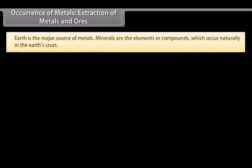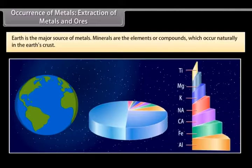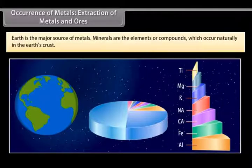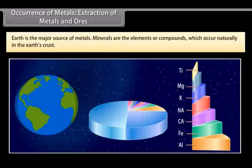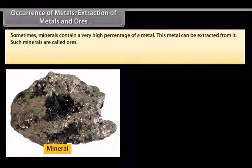Occurrence of metals. Extraction of metals and ores. Earth is the major source of metals. However, seawater also contains some soluble salts. Minerals are the elements or compounds which occur naturally in the Earth's crust. Sometimes, minerals contain a very high percentage of a metal. This metal can be extracted from it. Such minerals are called ores.